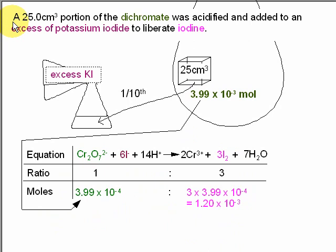Then it says a 25 cm cubed portion of the dichromate was acidified and added to an excess of potassium iodide to liberate iodine. So here is the volumetric flask which has got this many moles of dichromate, and we're taking out a 25 cm cubed portion. That's a tenth of it. So taking out a tenth reduces the amount to 3.99 times 10 to the minus 4 moles of dichromate that we're going to have in here. That is reacted with an excess of KI, with the iodide ions here.